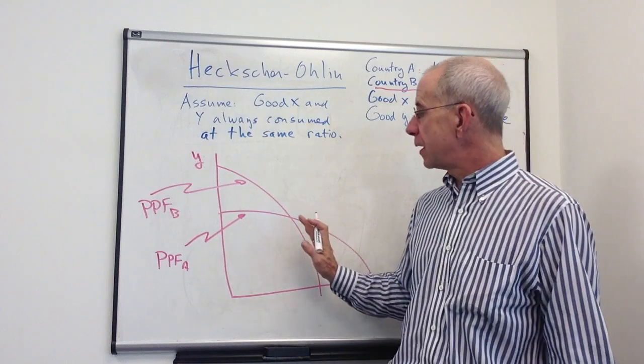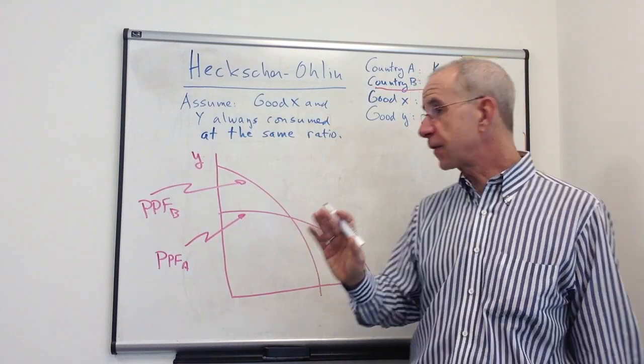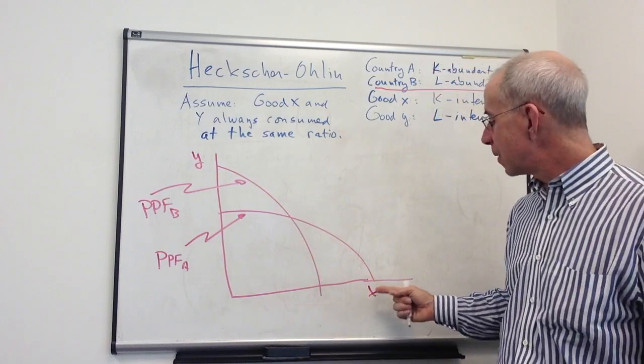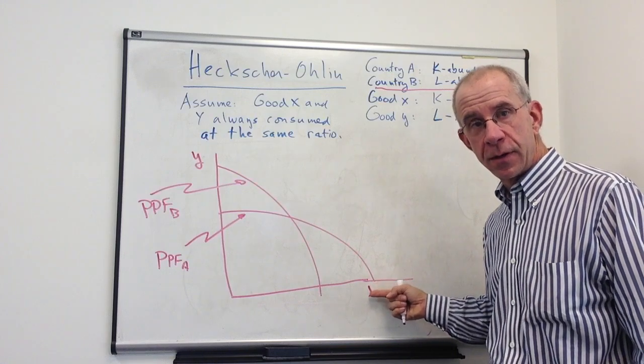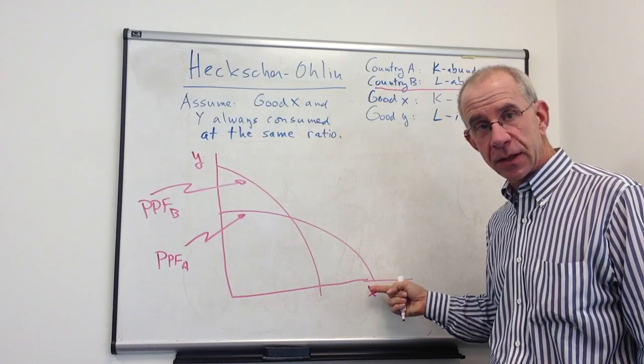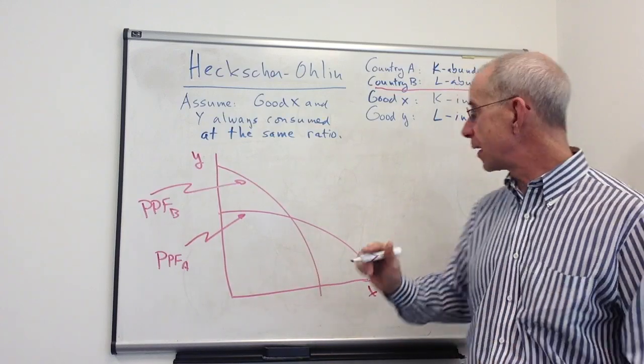So the definition of capital abundant is not so much that country A can produce more of X in a literal sense, but instead that it's about the trade-offs between the two.